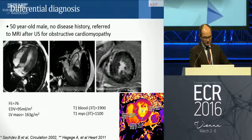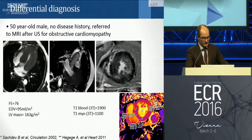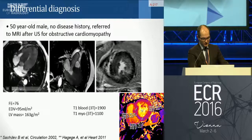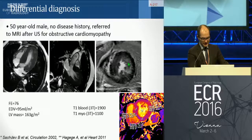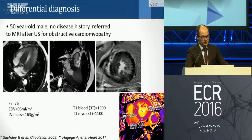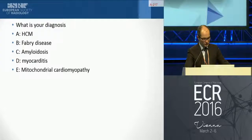MR can help in differential diagnosis. A 60-year-old male with no disease history was referred after ultrasound for obstructive cardiomyopathy. There is a huge homogeneous hypertrophy, lateral late gadolinium enhancement, and a low native T1 value below normal just before injection. What is your diagnosis: hypertrophic cardiomyopathy, Fabry disease, amyloid disease, myocarditis, or mitochondrial cardiomyopathy?